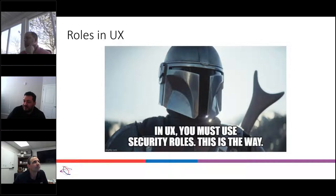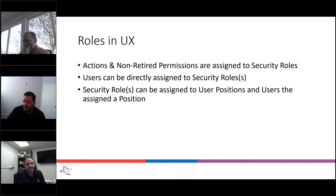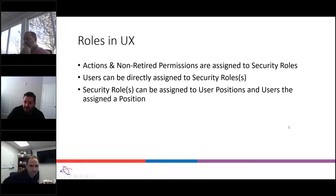In UX, you must use security roles — because this is the way. How do you build a role in UX? We have to assign actions and non-retired permissions. Retired permissions are the permissions that have been phased out and no longer have use in UX. Users can be directly assigned to security roles — that's one option. Another option is we can assign positions to the security roles, and we're going to talk about that more in a second.